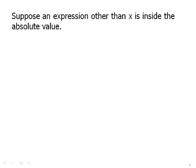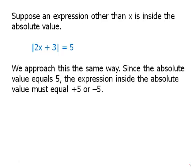Suppose an expression other than x is inside the absolute value — for example, the absolute value of the quantity (2x + 3) equals five. If that whole expression has an absolute value of five, then there are only two possibilities: either the expression inside equals five or equals negative five.